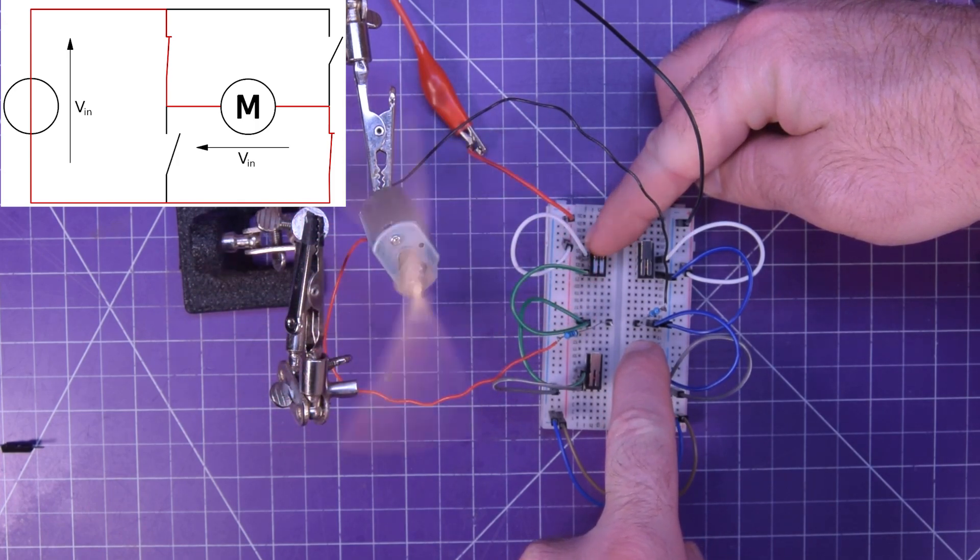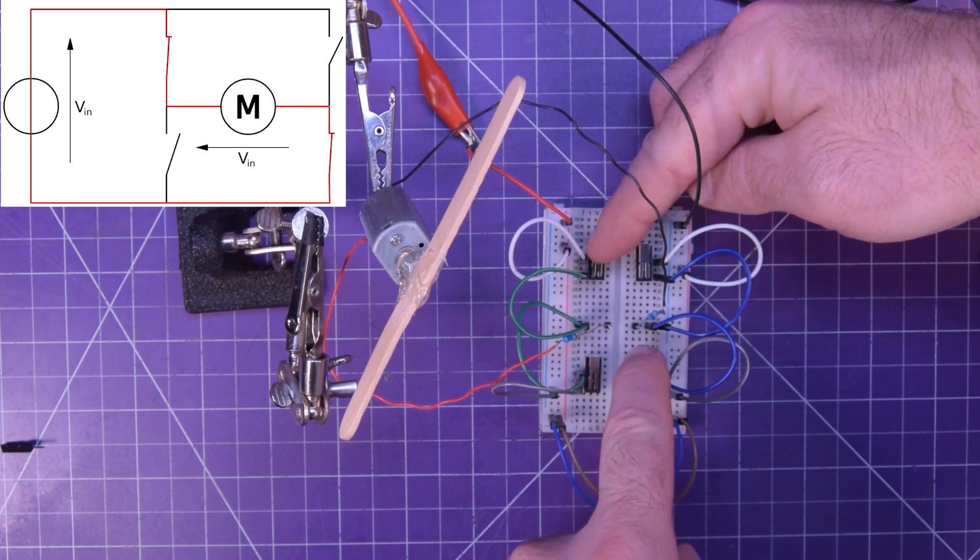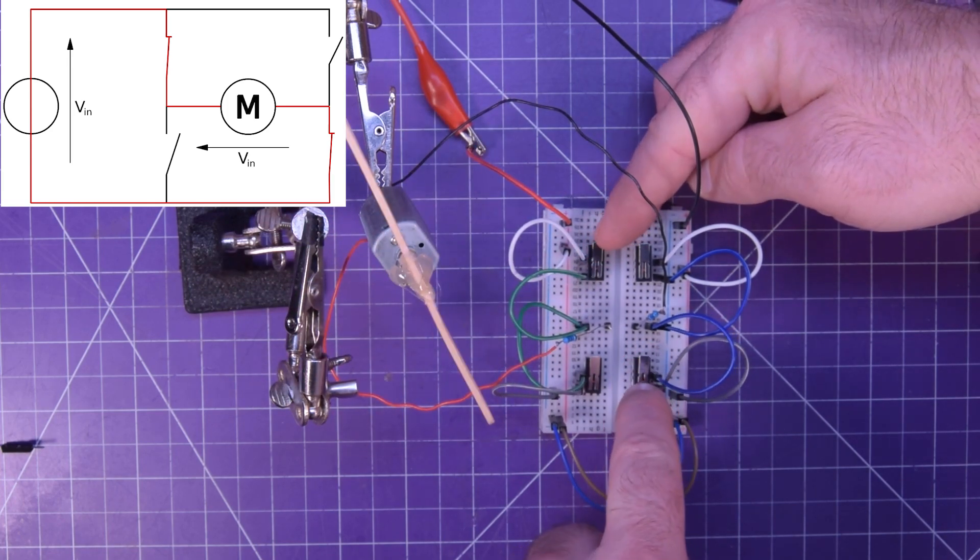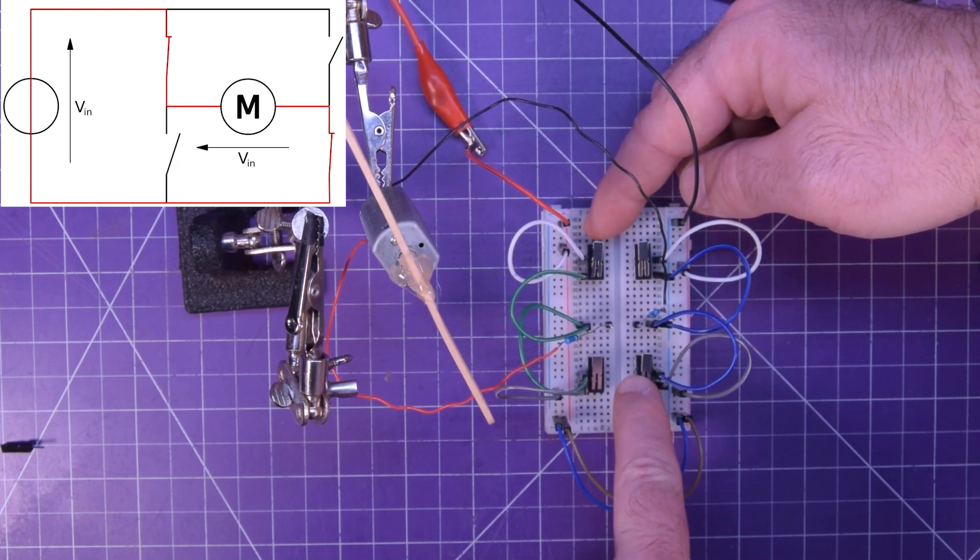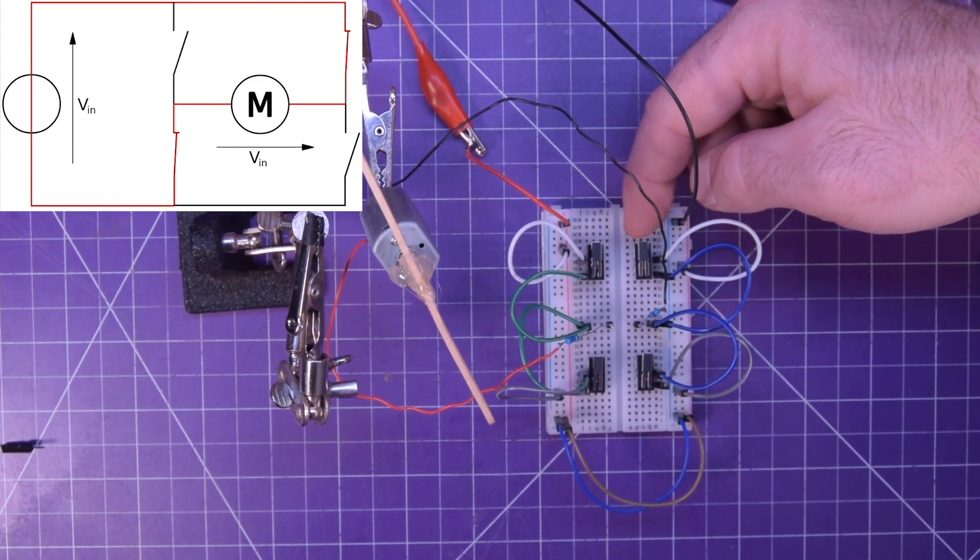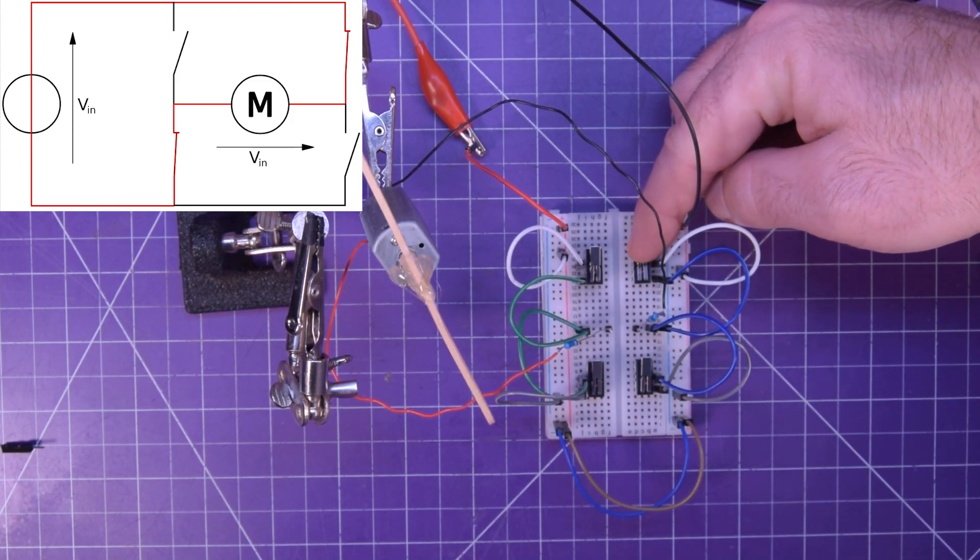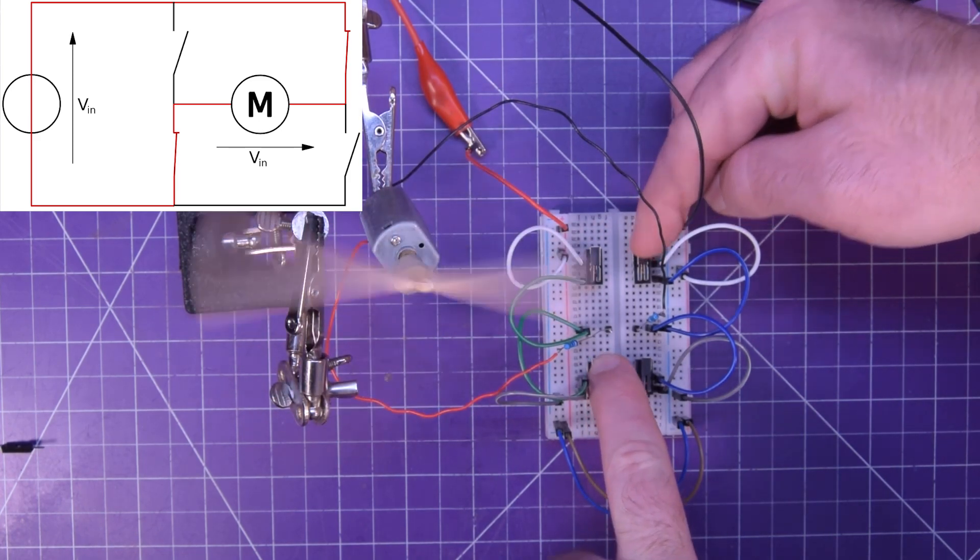It's spinning clockwise. If I let go of any of these, it stops. You really have to press both. That's because we're providing ground with the top one—I mean power with the top one and ground with the bottom one. And to go the other way, you just use the other diagonal. So you push down on this one and this one, and there the motor turns the other way.